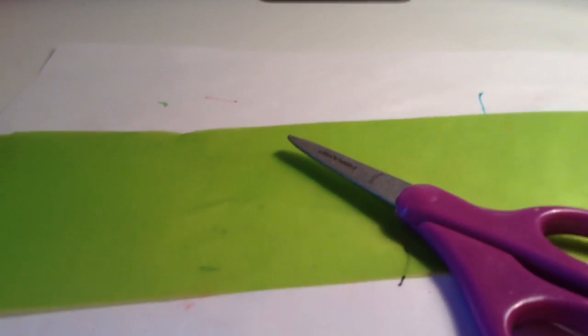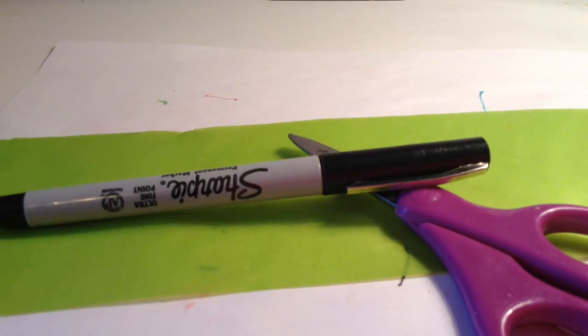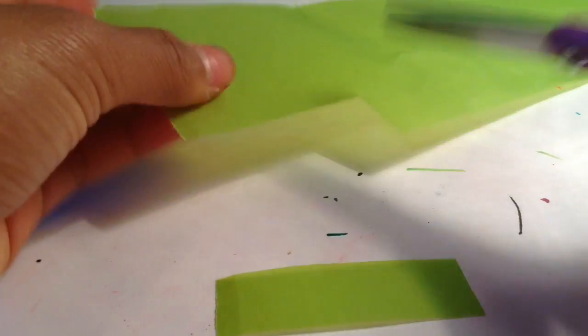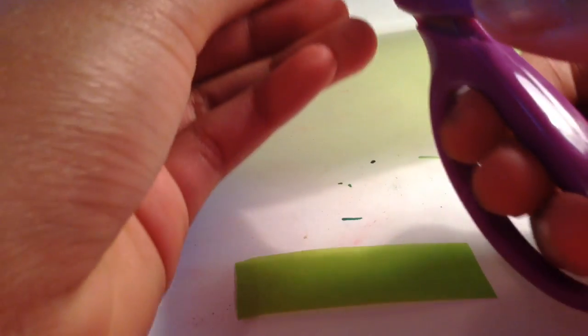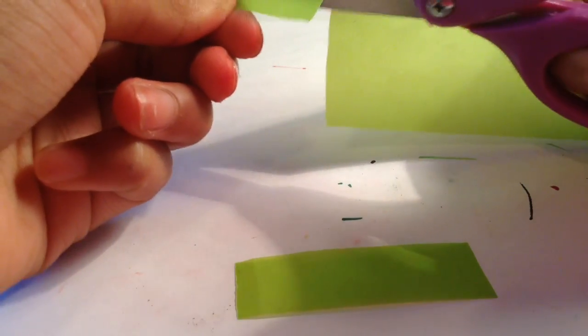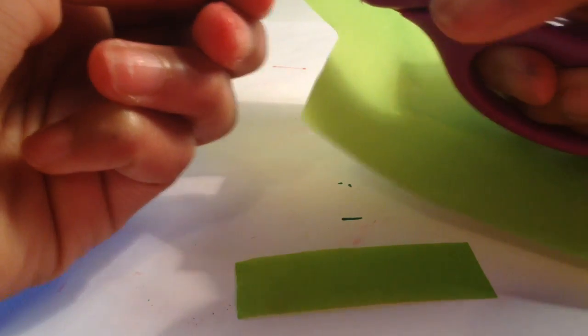This next one is pretty simple. You're just going to need paper, scissors, and sharpie and tape. So first, you're just going to cut out some rectangles or ovals, like long ovals, whatever you'd like.